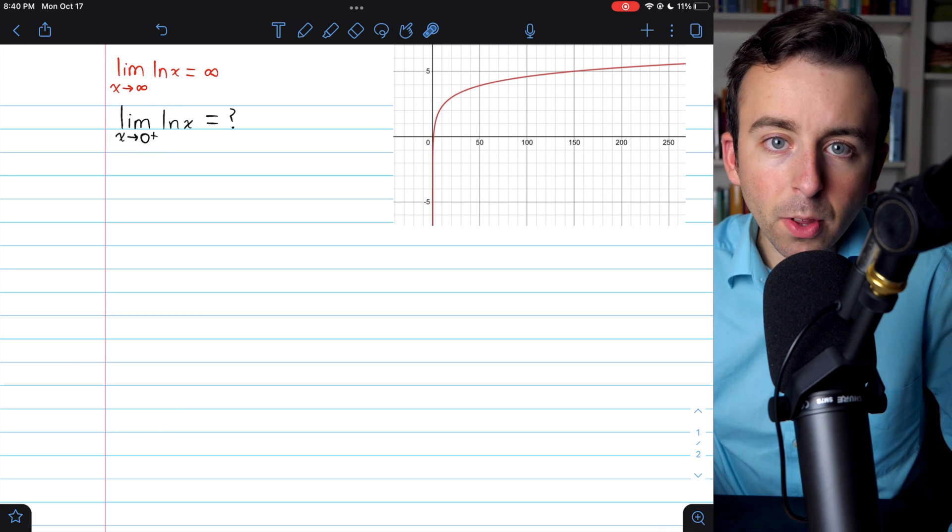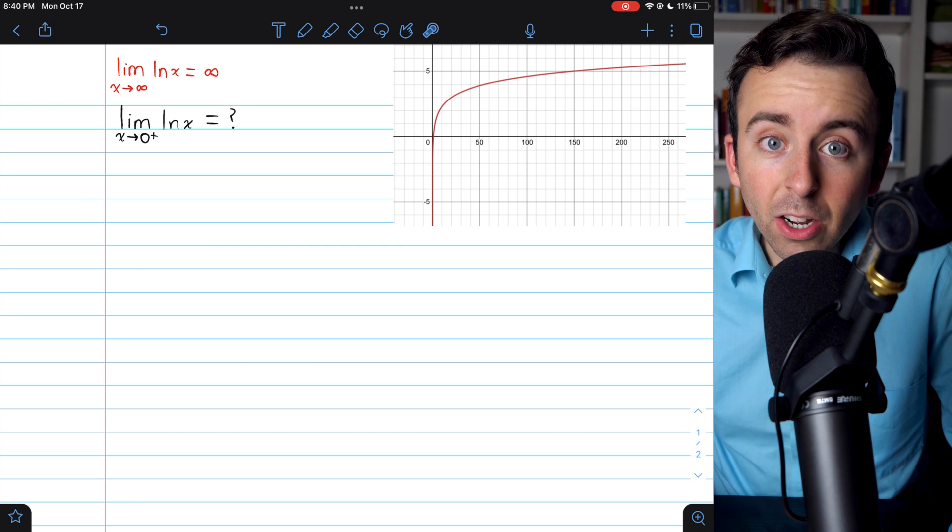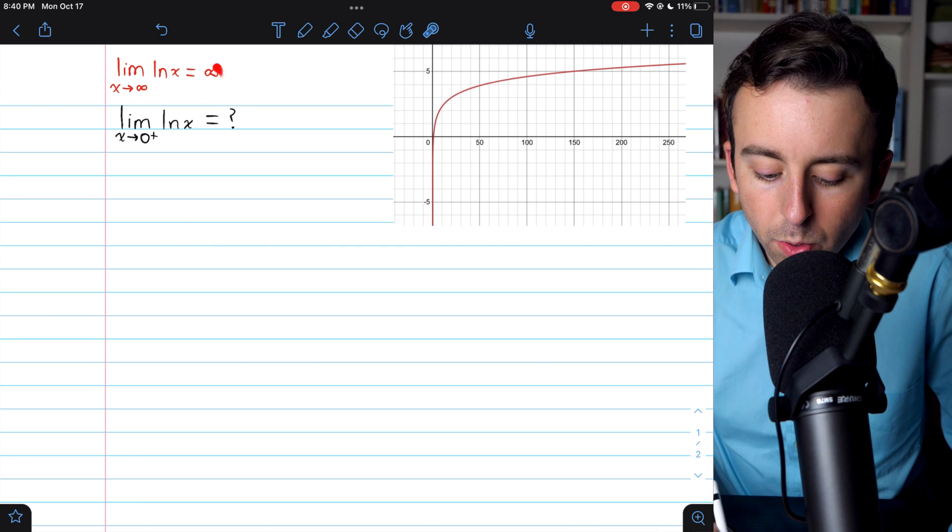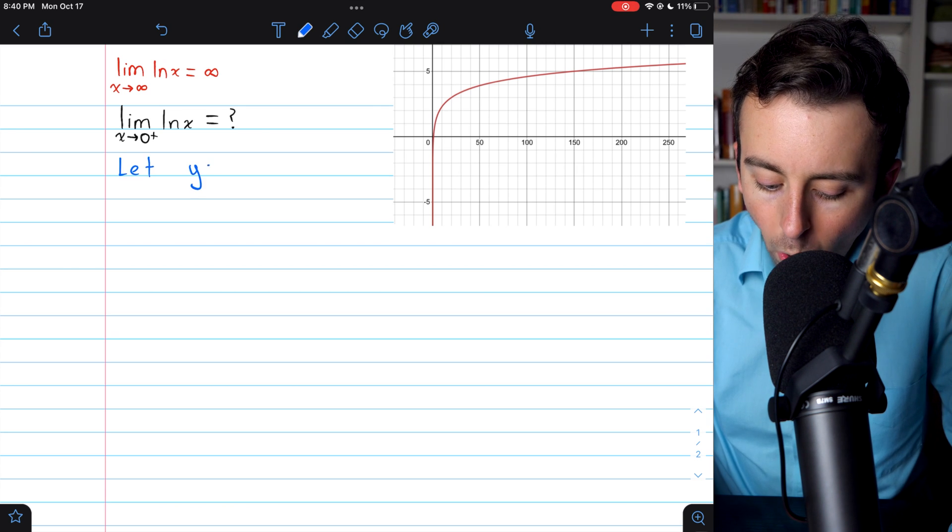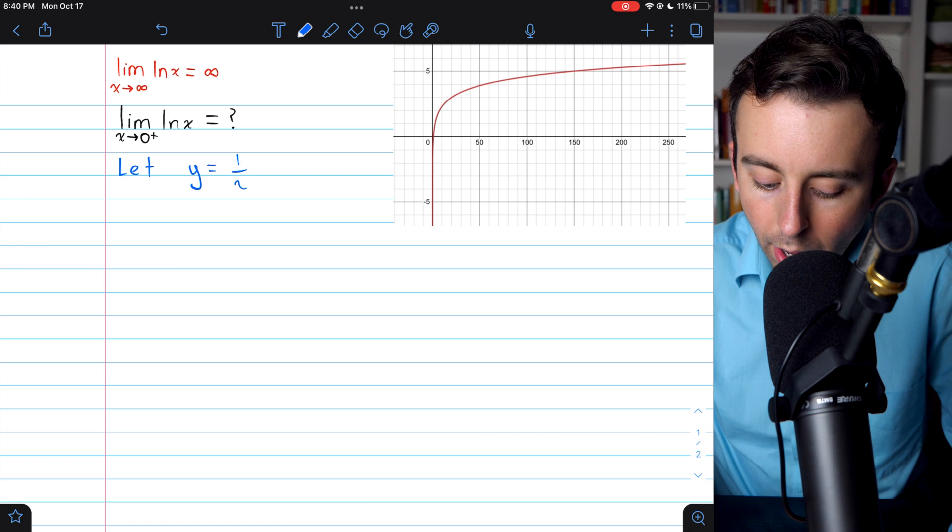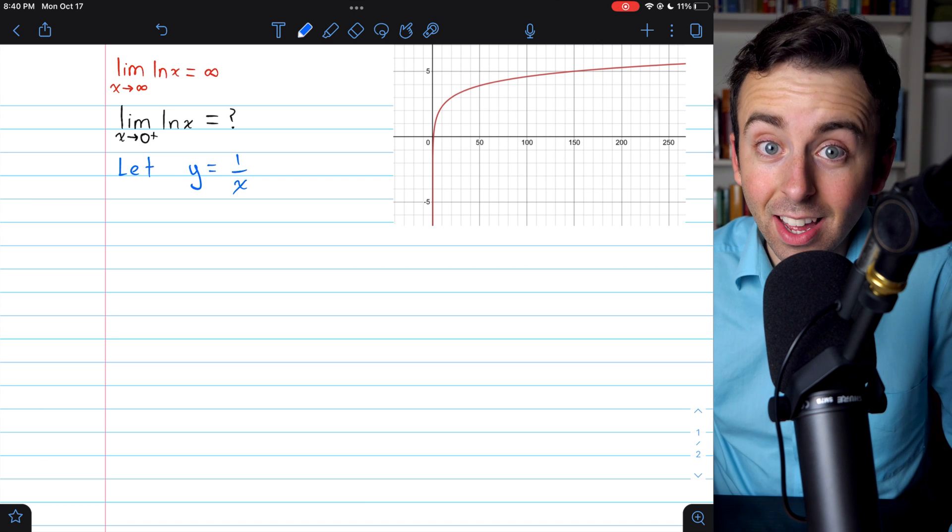For today's limit, we're going to want to change the variable in a way that will allow us to use this previous result. So what we'll say is let y equal 1 over x. And this is going to help us out.